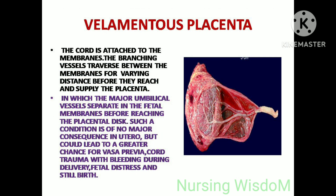Velamentous placenta: the cord is attached to the membranes. The branching vessels traverse between the membranes for a varying distance before they reach and supply the placenta, with the major umbilical vessels separating in the fetal membranes before reaching the placental disc. This condition is of no major consequence in utero but could lead to a greater chance for vasa previa, cord trauma with bleeding during delivery, fetal distress, and stillbirth.